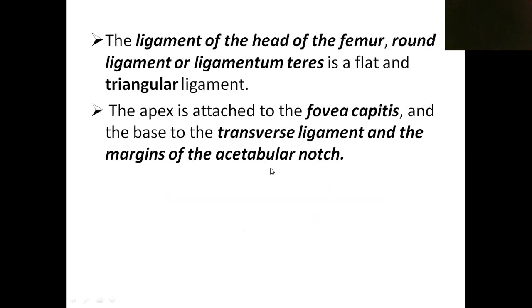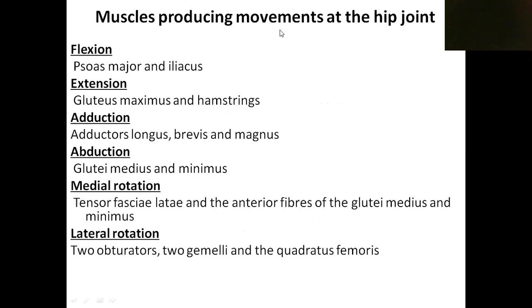Those are the ten supporting factors of the hip joint. The movements include flexion, extension, adduction, abduction, medial rotation, and lateral rotation. Flexion is by psoas major and iliacus; extension by gluteus maximus and hamstring muscles; adduction by adductor longus, brevis, and magnus; abduction by gluteus medius and minimus; medial rotation by gluteus medius and minimus; lateral rotation by the two obturator muscles, two gemellus muscles, and quadratus femoris.